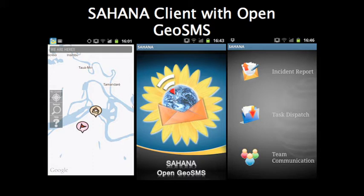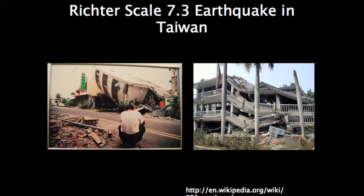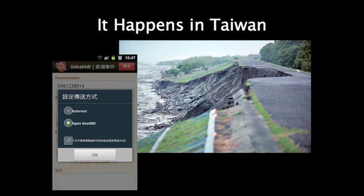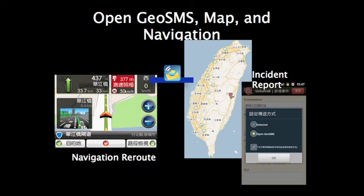The reason we have this idea is that Taiwan also has a lot of disasters — like a 7.3 magnitude earthquake, causing landslides and road damage. We're thinking about combining that with the Ushahidi application to let people report status back to the server. The next step is collaborating with navigation service providers, so once a status update is confirmed, they can send out notifications and the navigation client can reroute to avoid that road.